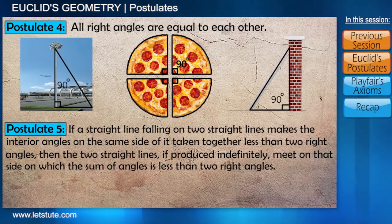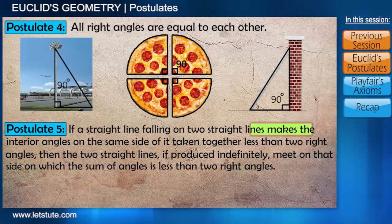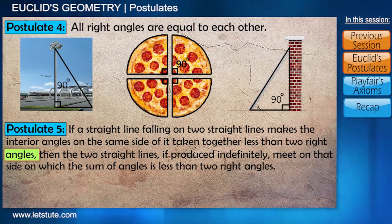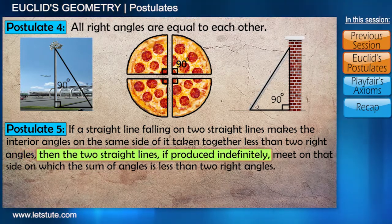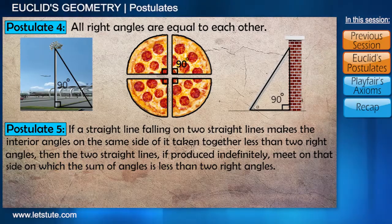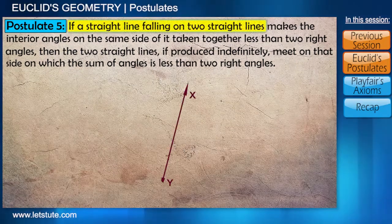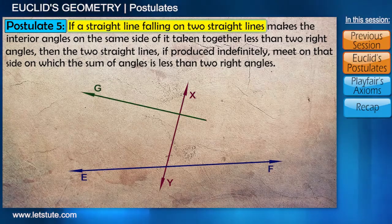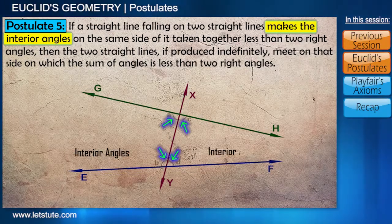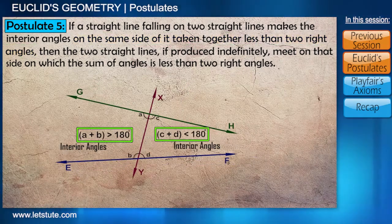Let's have a look at the last postulate for this session. If a straight line falling on two straight lines makes the interior angles on the same side taken together less than two right angles, then the two straight lines, if produced indefinitely, meet on that side on which the sum of the angles is less than two right angles. We need an example to understand this postulate. Suppose there is a line XY falling on two lines EF and GH. Because of line XY, EF and GH have made interior angles. The side which has the addition of these angles less than 180 degrees — the lines will meet on that side.